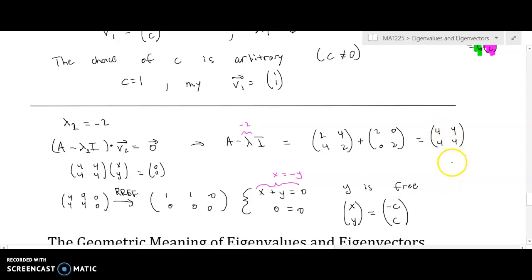Once again, we can verify that if you take the [[4, 4], [4, 4]] matrix and multiply it by [-c, c], what you're going to get out is a multiple of that matrix. In fact, let's try to squeeze it in here. Let's say [[4, 4], [4, 4]] times [-c, c].